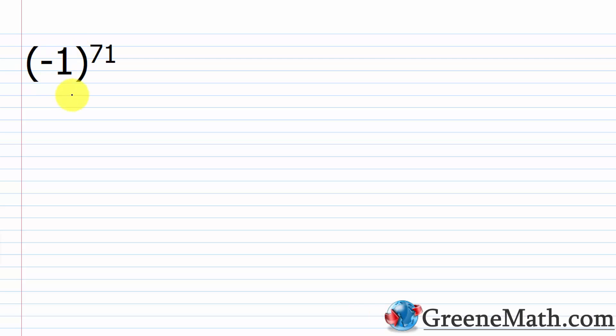What about negative 1 to the power of 71, with negative 1 in parentheses? My exponent is odd, so I would have an odd number of negative factors, giving a negative result. Since 1 to the 71st power is just 1, my answer is negative 1.